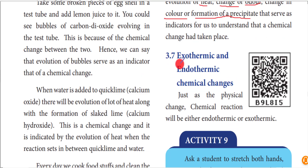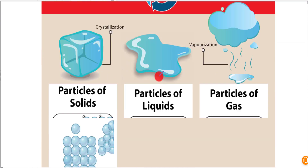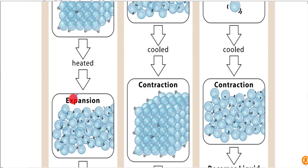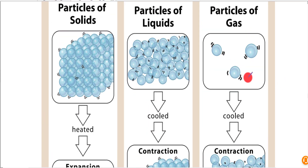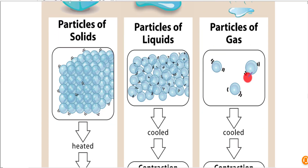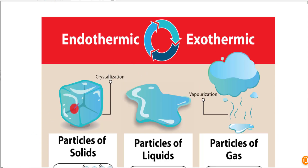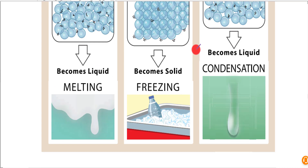Now let's see exothermic and endothermic reactions. An exothermic reaction is one that liberates or releases heat. An endothermic reaction is one that absorbs heat, causing cooling. A simple example: mixing water with a detergent can demonstrate temperature changes. The exothermic or endothermic nature of a reaction depends upon the state changes and the temperature involved in the reaction.